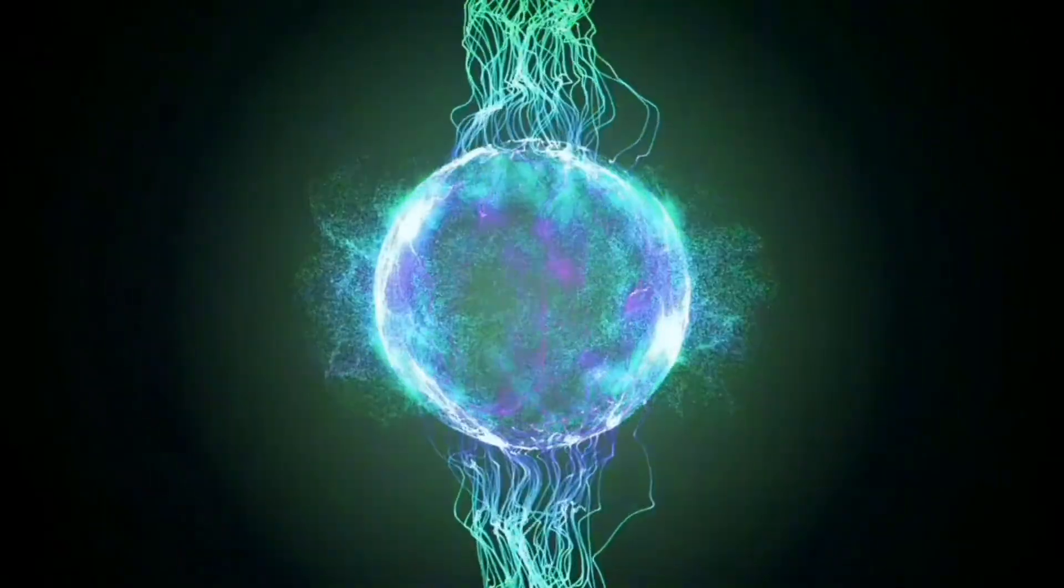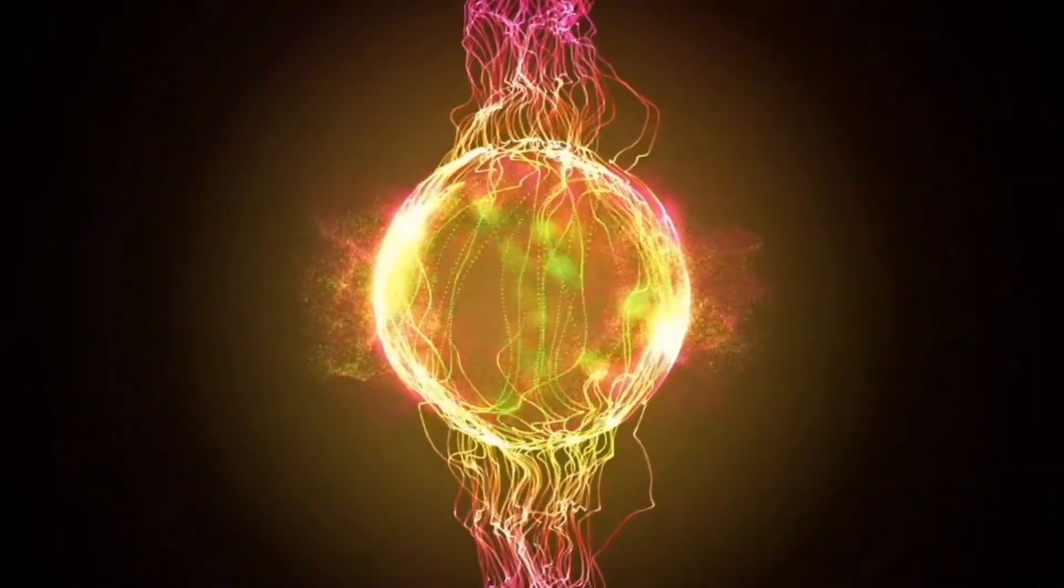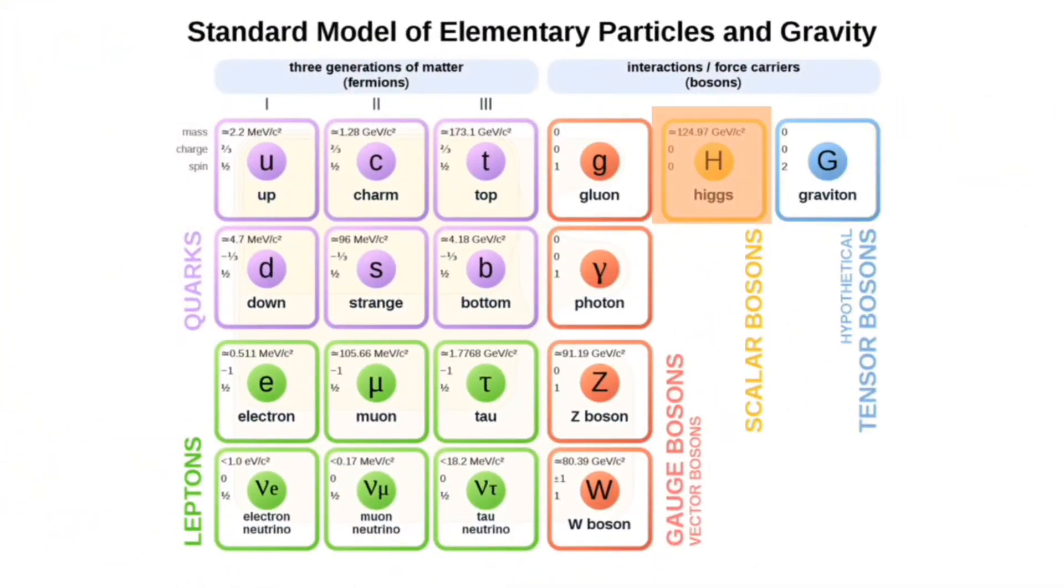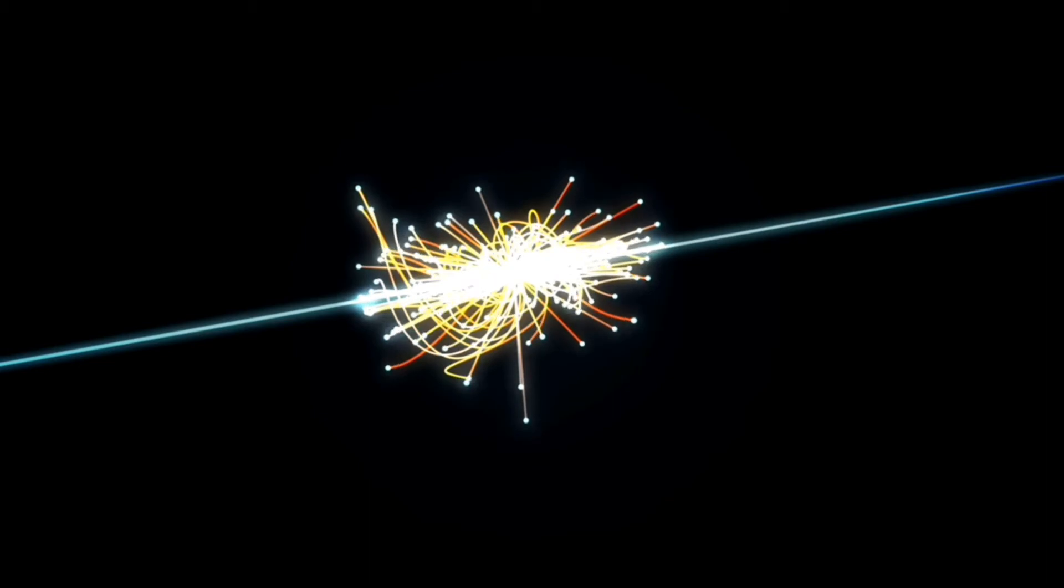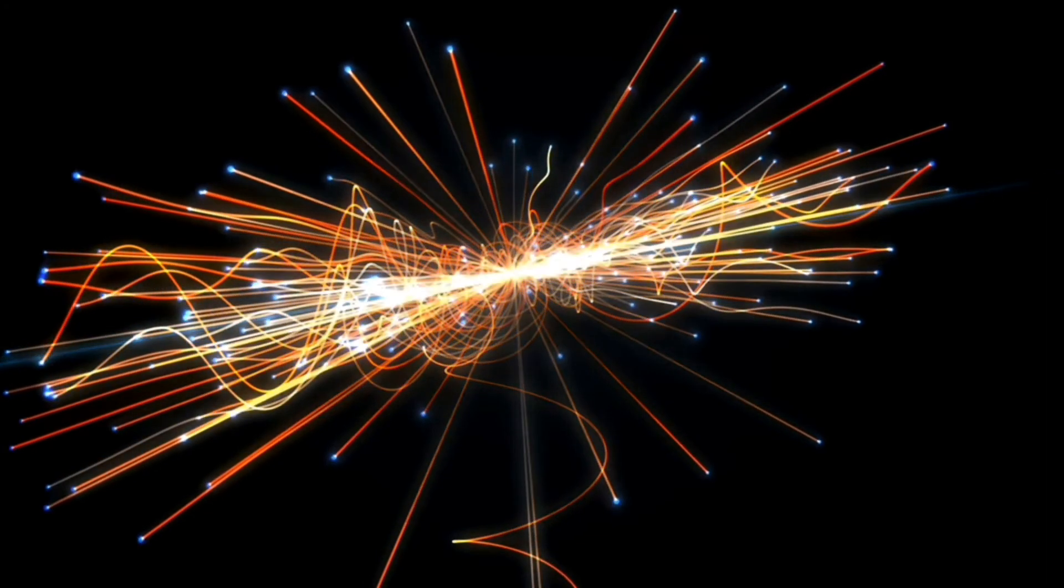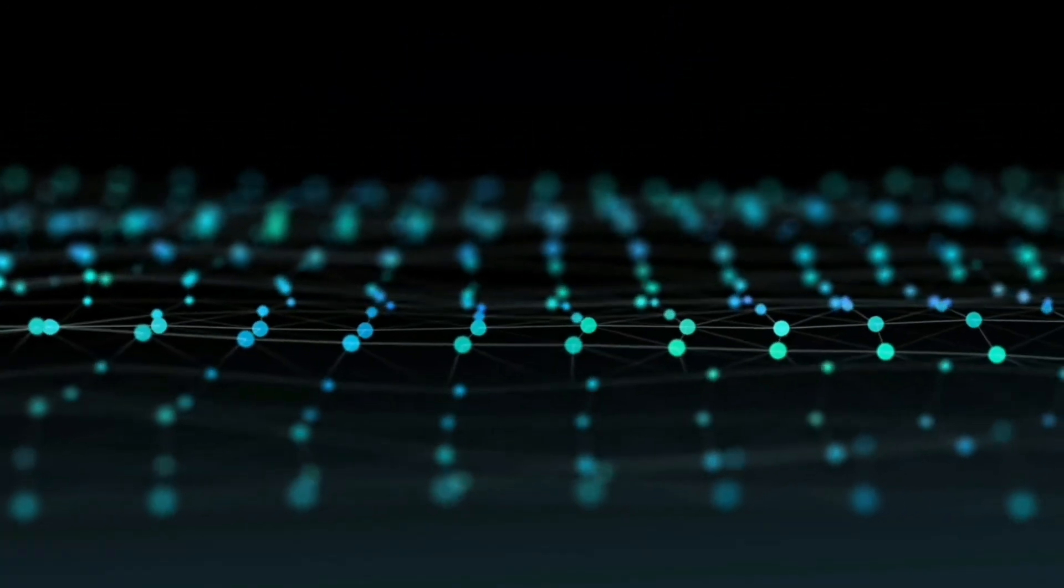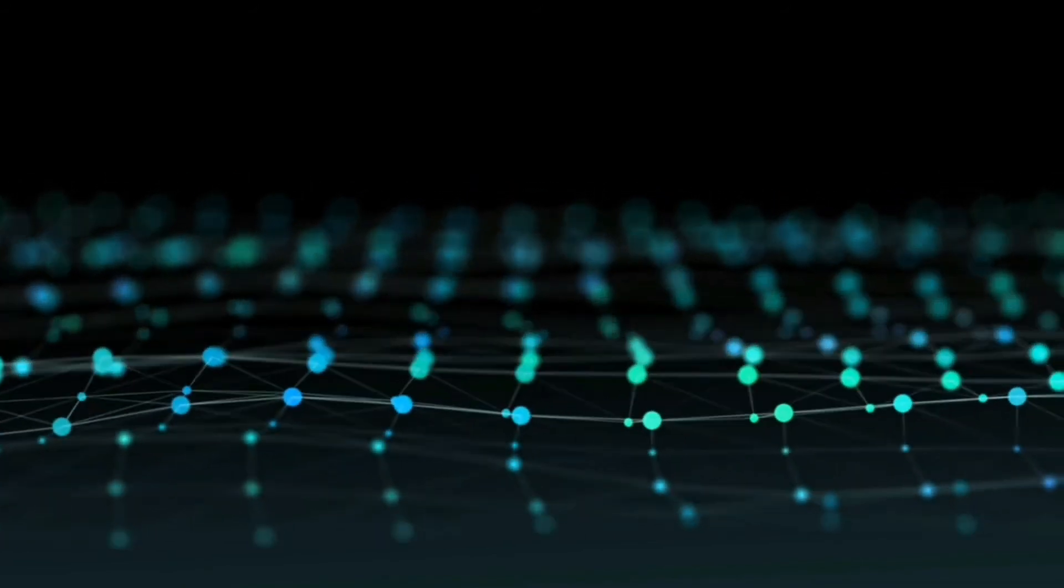The Higgs boson is the fundamental particle associated with the Higgs field, a field that gives mass to other fundamental particles such as electrons and quarks. Higgs boson was discovered in the year 2012 from the collision of two proton particles at the Large Hadron Collider at CERN. Higgs boson, also known as the God particle, is produced by the quantum excitation of the Higgs field.